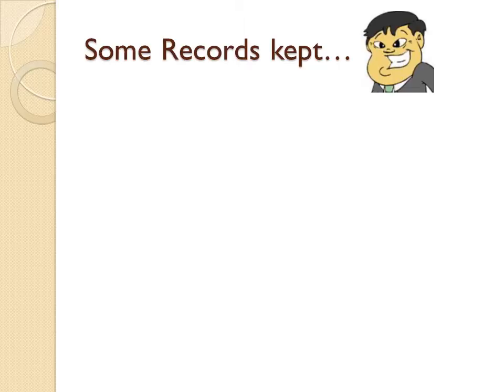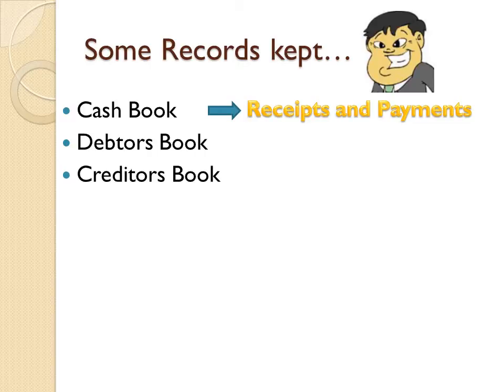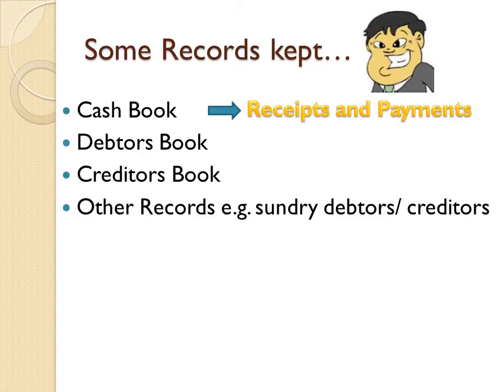Recall from Part 1 I introduced the character Boaz Bomani. For Boaz, his records were not burned or destroyed, so some records would have been kept — like the cash book recording receipts and payments, a debtors book showing how much people owe him, a creditors book showing who he owes, and other records like sundry debtors and creditors such as utility companies, insurance, or rental income.